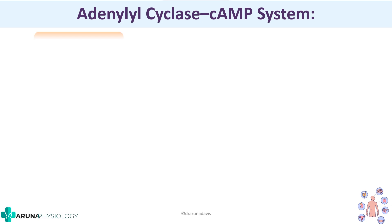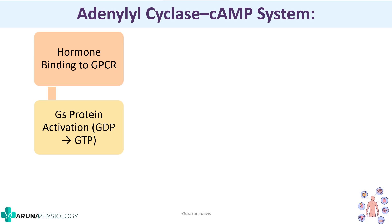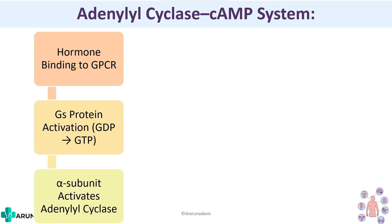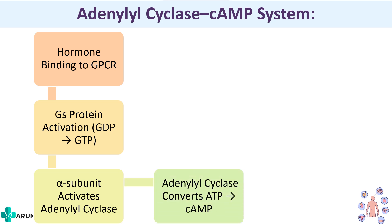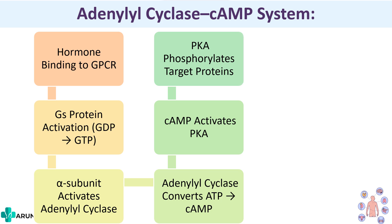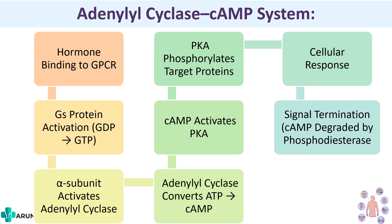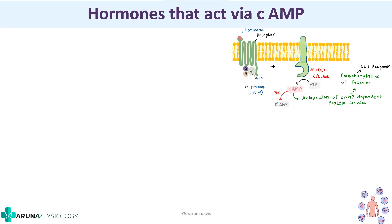In flowchart form: when a hormone binds to the G protein-coupled receptor, the GS protein is activated (GDP is converted to GTP). The alpha subunit dissociates and activates adenylyl cyclase, which converts ATP to cAMP. cAMP activates protein kinase A, which phosphorylates target proteins, producing a cellular response. Signal termination occurs when cAMP is degraded by phosphodiesterase.